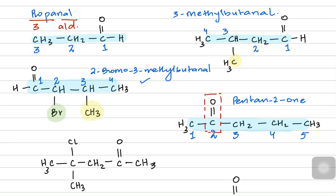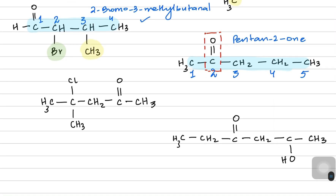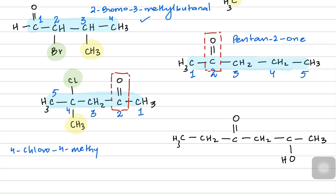Next structure: we have a branch and a ketone. The carbonyl is in the middle, so it's a ketone. Numbering from the right side — which is closer to the carbonyl — gives: one, two (the ketonic carbon), three, four, five. On carbon four there is a chloro and a methyl group. We name chloro first (letter C): 4-chloro-4-methylpentan-2-one.